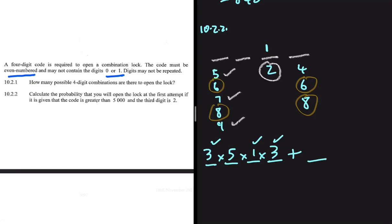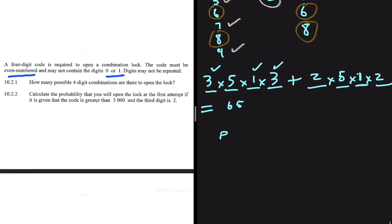Case two: if six or eight occupies the first spot, we have two possible digits there. On the second spot we have five digits; on the third spot we have one (two). On the last spot, if six occupied the first position we are left with four and eight, and if eight occupied the first position we are left with four and six — so two possible digits for the last spot. This gives 2 × 5 × 1 × 2 = 20. The total favorable outcomes are 45 + 20 = 65, so the probability equals 65 divided by 840, which gives approximately 0.08.